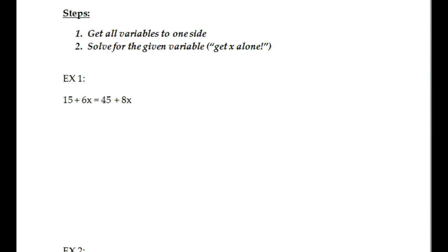I like to look and say, what are the variables? I have a 6x and an 8x. Which one is lower — the 6 or the 8? The 6. So that's the one I'm going to move. The one that has the lowest number in front of it is the one I'm going to deal with first. So 6x — it's a positive 6x. So how do you get rid of a positive 6x? You subtract it. I don't want it there anymore, so I'm going to subtract 6x from both sides.